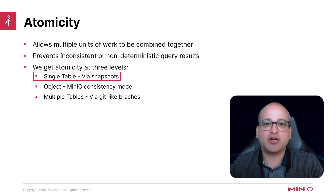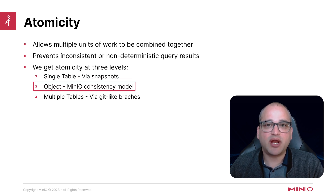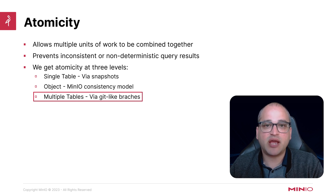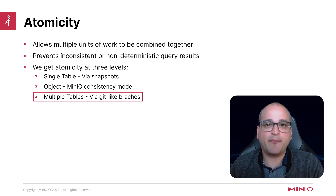We've been referring to these as snapshots. The important thing is that new snapshots never invalidate previous snapshots. At the object level, MinIO gives us atomicity through its support for object immutability — essentially a guarantee that changes to objects never overwrite the original version of that same object. Finally, we can even do atomic changes across a set of multiple tables at once. We saw this in our session on Git-like branching, where we used the concept of branches and merging to replay changes from one branch onto another.